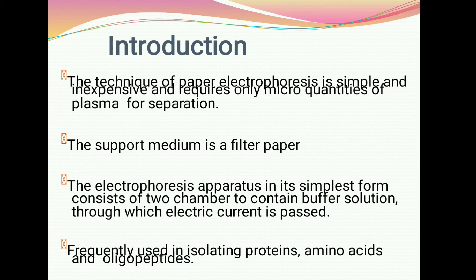The electrophoresis apparatus in its simplest form consists of two chambers to contain buffer solution through which electric current is passed. Paper electrophoresis is frequently used in isolating proteins, amino acids, and oligopeptides.